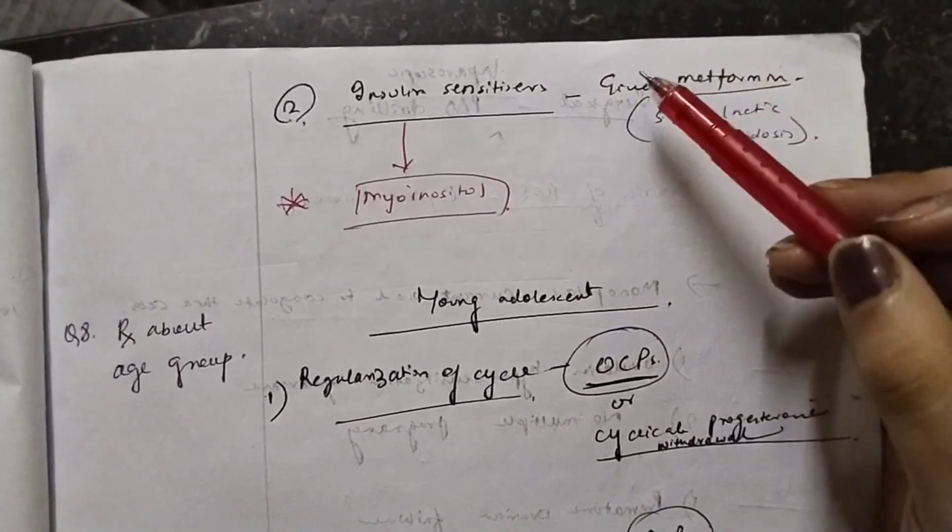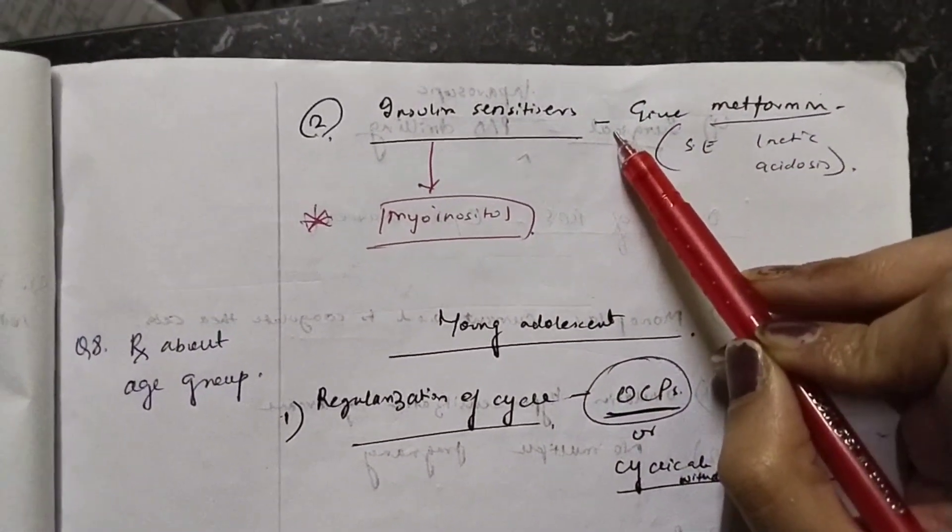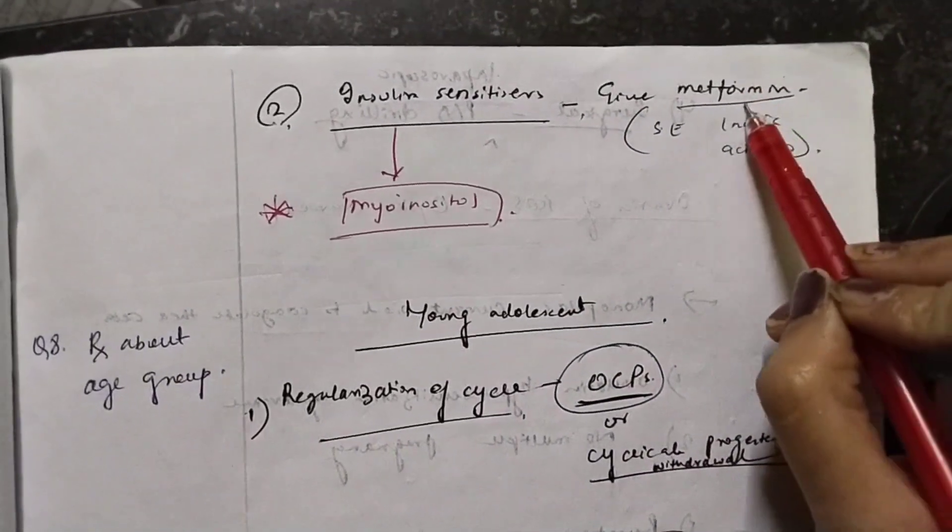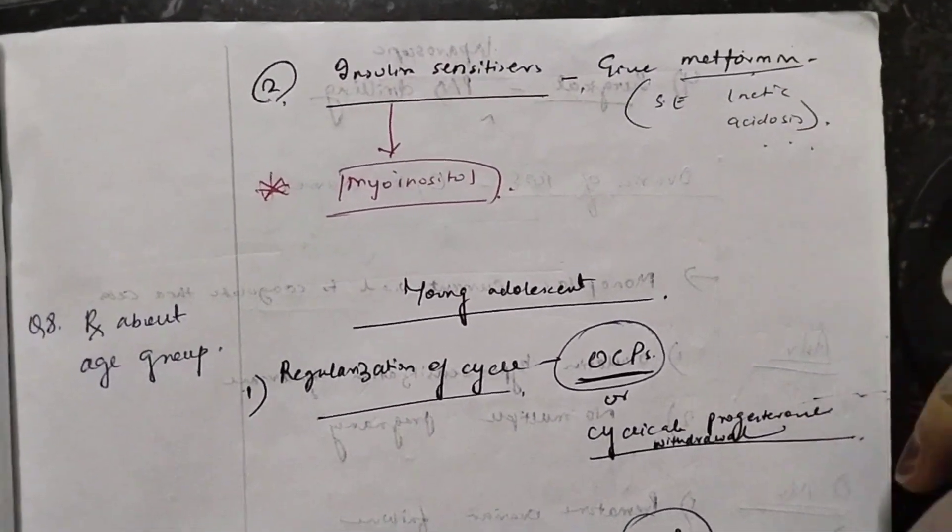Now, the second thing is insulin sensitizers. We can use insulin sensitizers like myo-inositol or metformin. But the side effect of metformin is lactic acidosis which is important to be learned.